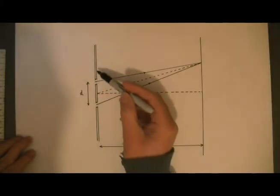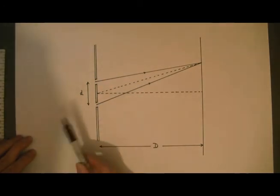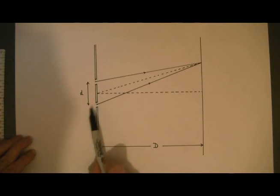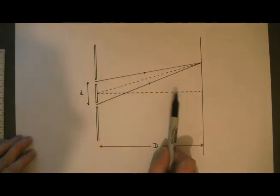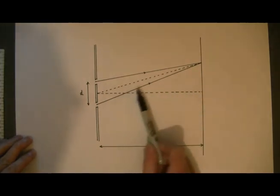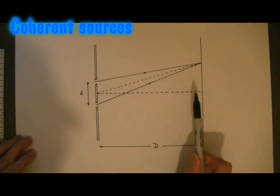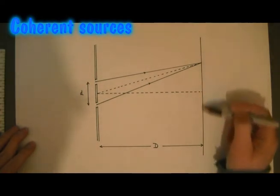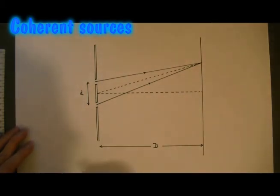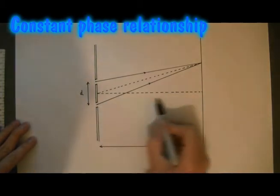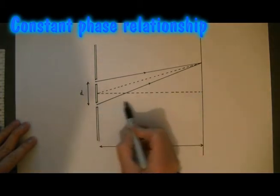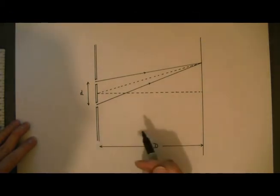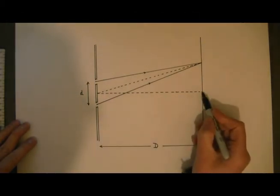Here I've got a barrier with two narrow slits in it. As light waves travel towards the barrier, they will diffract as they go through the two slits, spread out into the area beyond, and overlap. As they overlap there will be places where they interfere constructively and places where they interfere destructively. Let's start by thinking about the rays that go to the midpoint — the ray from this slit and the ray from this slit have both travelled the same distance. Because they've travelled the same distance, they will be in phase when they arrive here, so I'll get a bright fringe.